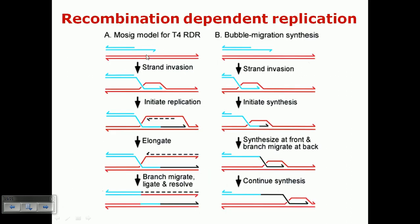Here we can see the recombination-dependent and replication-dependent models. There are two models: one is the bubble migration synthesis model, and another is the Mosing model of T4 replication. In the first model, one strand invades the other — which has a deleted terminal region — after which strand invasion occurs, replication begins in both directions, branch migration proceeds, the Holliday junction is resolved, and two different gene segments are produced.